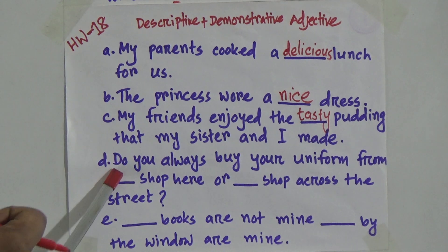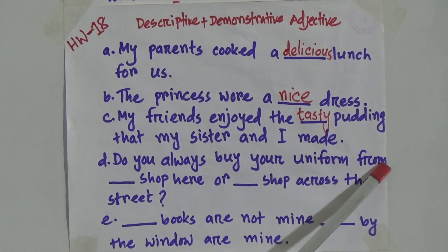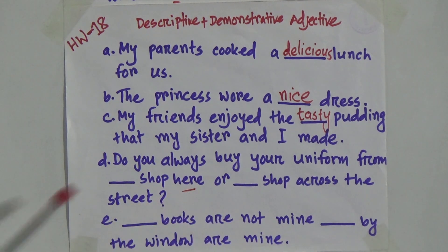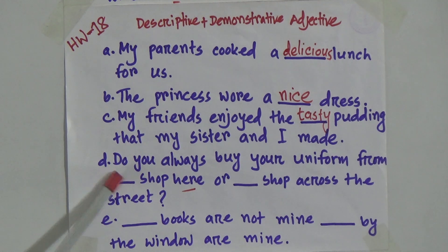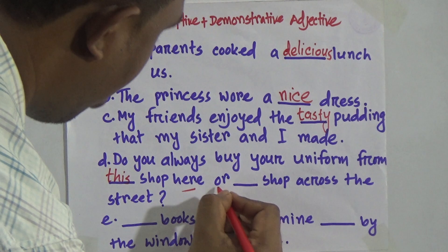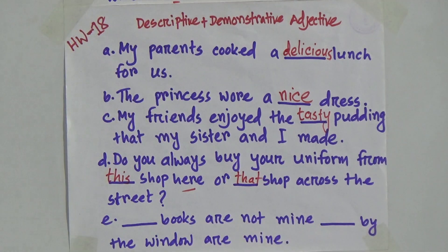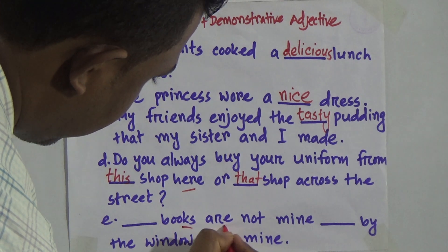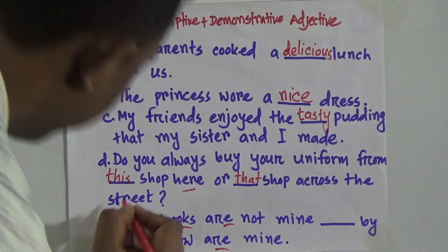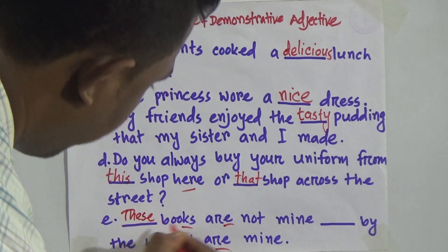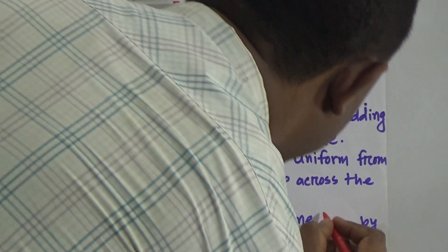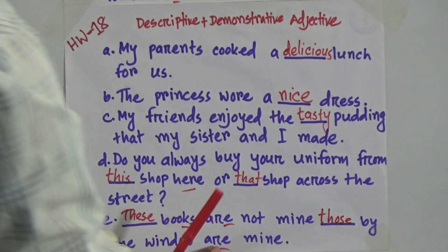Number D: do you always buy your uniform from gap shop here — mark this, here means it's nearby you — or gap shop across the street, which is not nearby you. So: do you always buy your uniform from this shop here, or that shop across the street? Number E: gap books are not mine — plural sign — these books are not mine. Gap by the window are mine — also plural — those by the window are mine.